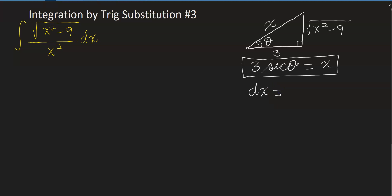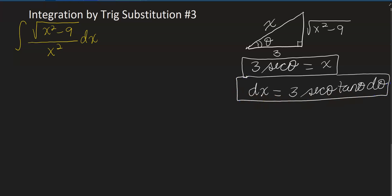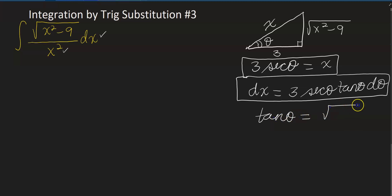dx equals 3 times the derivative of secant theta, which is secant theta tangent theta, so dx equals 3 secant theta tangent theta dθ. We also need the square root of x² minus 9. From the triangle, tangent of theta equals the square root of x² minus 9 over 3, so the square root of x² minus 9 equals 3 tangent theta. Those are the three substitutions we need.